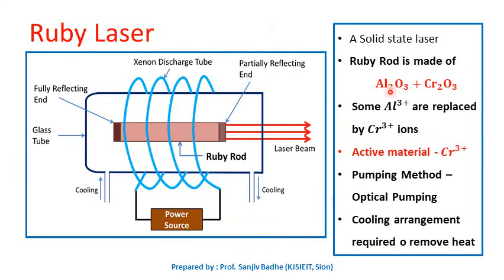The ruby rod is made up of aluminum oxide and chromium oxide. Some of the aluminum ions in the aluminum oxide are replaced by chromium ions. These chromium ions are the active centers — lasing action will occur for these chromium ions, because they are characterized with a metastable state. This ruby rod is pink in color.